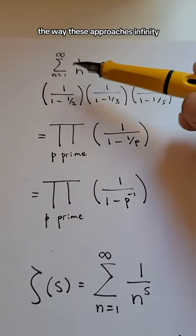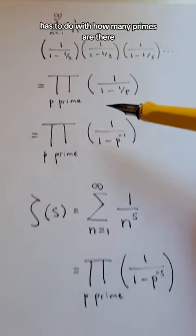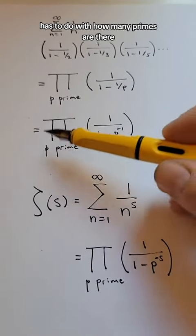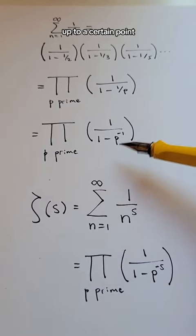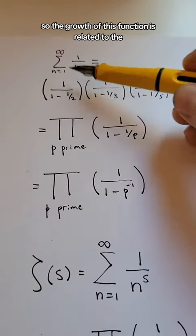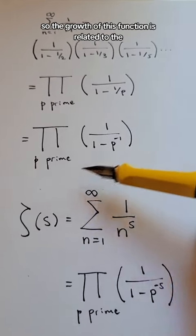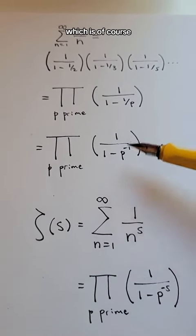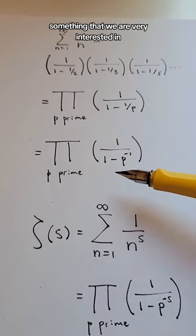the way this approaches infinity has to do with how many primes are there up to a certain point. So the growth of this function is related to the distribution of prime numbers, which is, of course, something that we are very interested in.